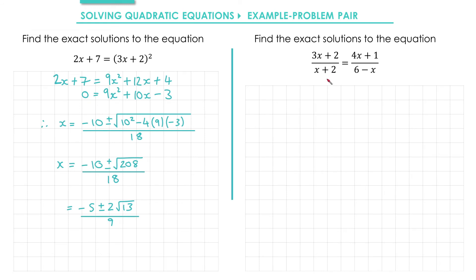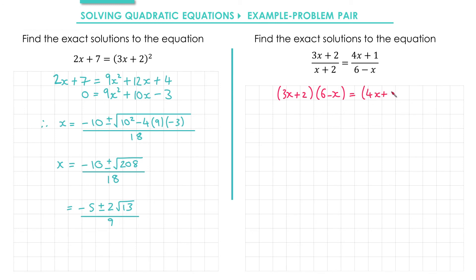To begin with I'm going to do two steps at once. I'm going to multiply both sides by (x + 2) — that cancels it out on this side and it ends up on top of the other fraction. At the same time I'm going to multiply both sides by (6 minus x) — that cancels out the denominator on that side but it appears in a bracket next to (3x + 2). So we get (3x + 2) multiplied by (6 minus x) equals (4x + 1) multiplied by (x + 2).